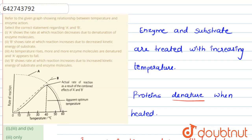Statement 1 says: A shows the rate at which the reaction decreases due to denaturation of enzyme molecules. This statement is correct, because when we increase the temperature, that leads to increased denaturation of enzyme molecules, and if enzymes get denatured, the rate of reaction will come down.